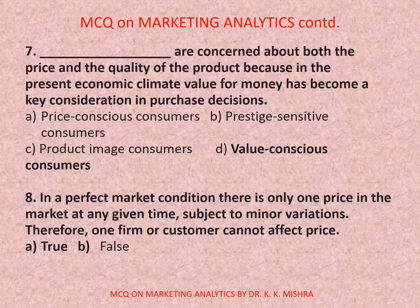Question number eight: In a perfect market condition, there is only one price in the market at any given time subject to minor variations; therefore one firm or customer cannot affect price. Options are: a) true, b) false. Correct option is a) true. Now move to next slide.